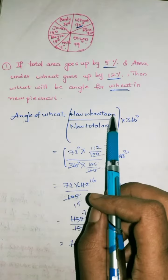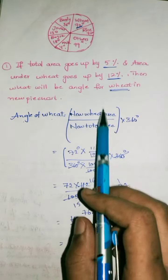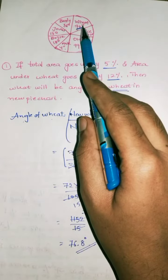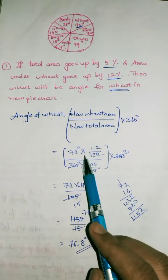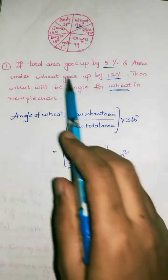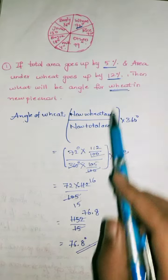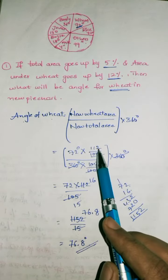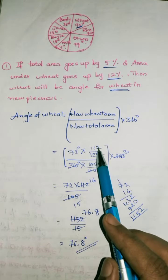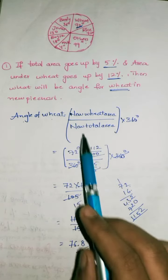What is the new wheat area? The wheat area in the pie chart is 72 degrees. It goes up by 12%, so 12% means it went from 100 to 112. So it's 72 × 112/100.